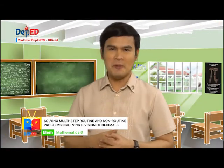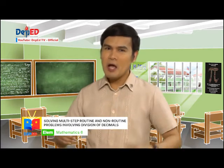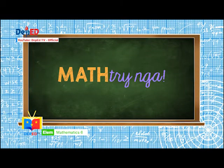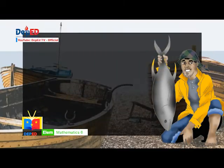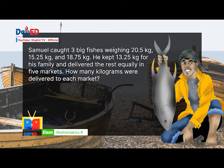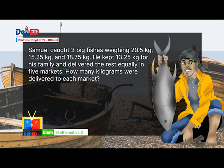Mateo and all of you kamatinik, join with me and say, Matry nga! Here is the problem. Samuel caught 3 big fishes weighing 20.5 kilograms, 15.25 kilograms, and 18.75 kilograms. He kept 13.25 kilograms for his family and delivered the rest equally in five markets. How many kilograms was delivered to each market?